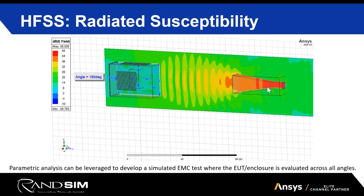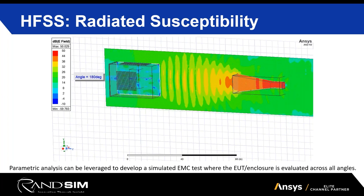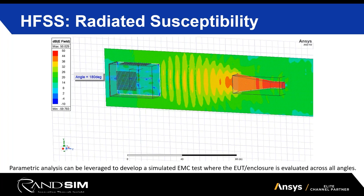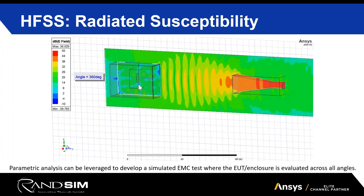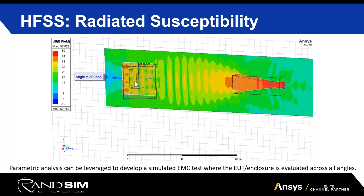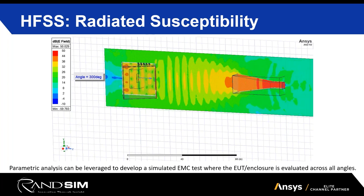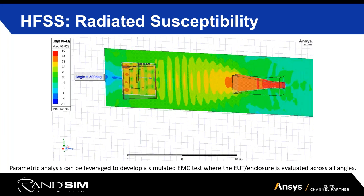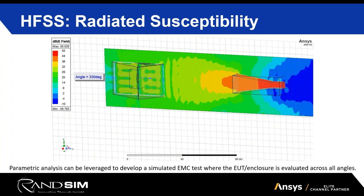Using that same Antenna Toolkit, you can create a representative test antenna and build an actual simulated EMC test environment. For this radiated susceptibility example, we assigned a design variable to rotate the model. As the model rotates, you can see that at certain points — particularly where the slots line up with the horn antenna — you get a very large amount of fields inside the enclosure, helping you correlate to an actual EMC-related test.